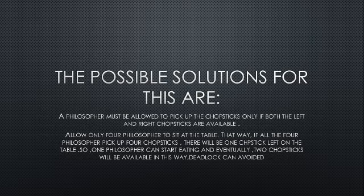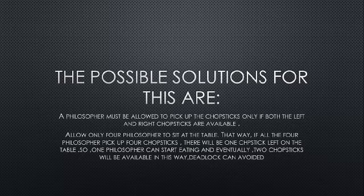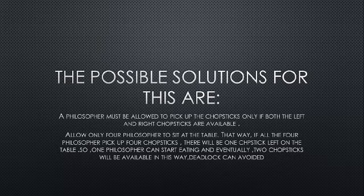The possible solutions are: first, a philosopher must only be allowed to pick up the chopsticks if both the left and right chopstick are available. Second, allow only four philosophers to sit at the table. That way, if the four philosophers pick up the four chopsticks, there will be one chopstick left on the table, so one philosopher can start eating and eventually two chopsticks will be available. In this way, deadlock can be avoided.